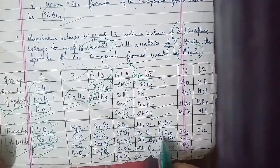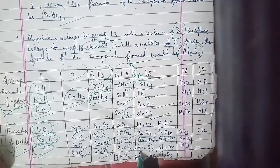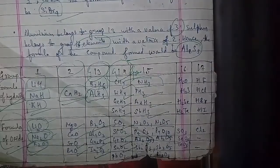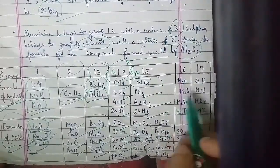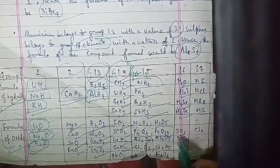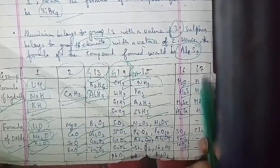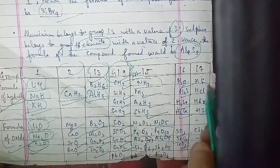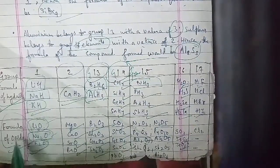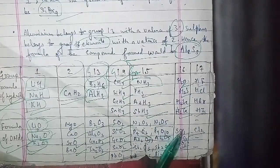For Group 16: hydride formulas are H2O, H2S, H2Se, H2Te; oxide formulas include SO3, SeO3, TeO3. For Group 17: hydride formulas are HF, HCl, HBr, HI; the oxide formula formed is Cl2O with respect to Group 17.